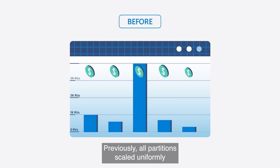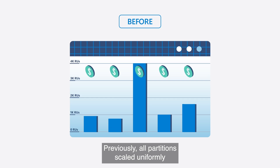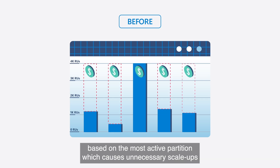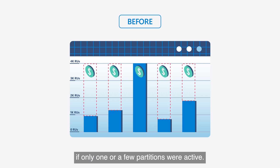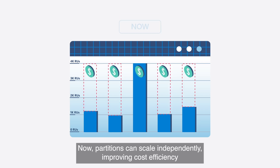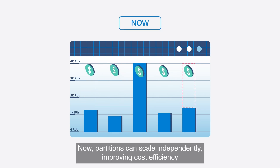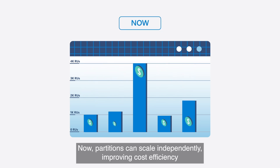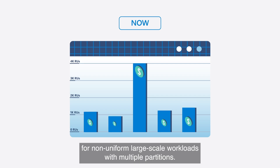Previously, all partitions scaled uniformly based on the most active partition, which caused unnecessary scale-ups if only one or a few partitions were active. Now, partitions can scale independently, improving cost efficiency for non-uniform large-scale workloads with multiple partitions.